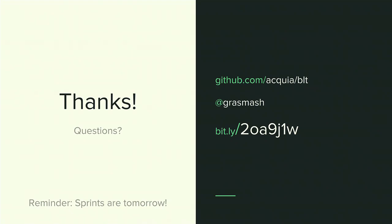Question: I noticed Vagrant was there — is there Docker support? You can actually use any LAMP stack you want — BLT is LAMP stack agnostic. We have a command that creates a Drupal VM by default, but I use MAMP and that works fine. Jeff Geerling, who maintains Drupal VM, is porting it to Docker, so it will support Docker as soon as that happens. Thanks a lot, everyone.